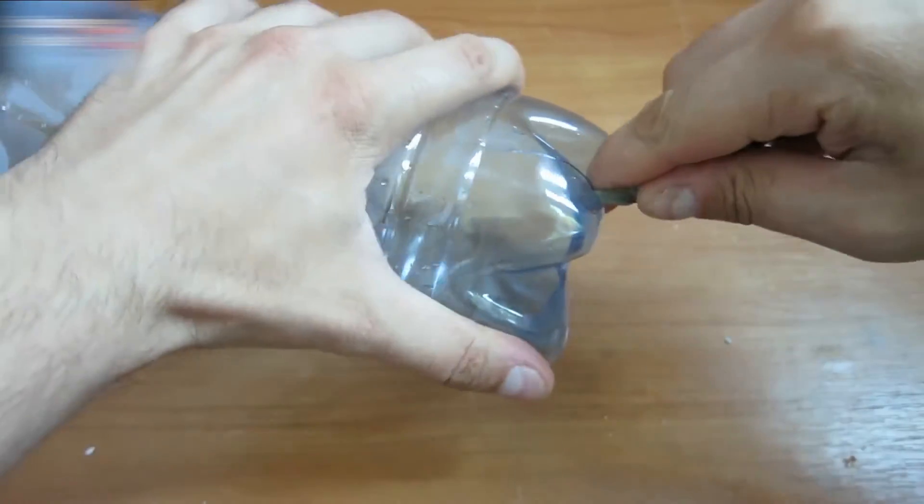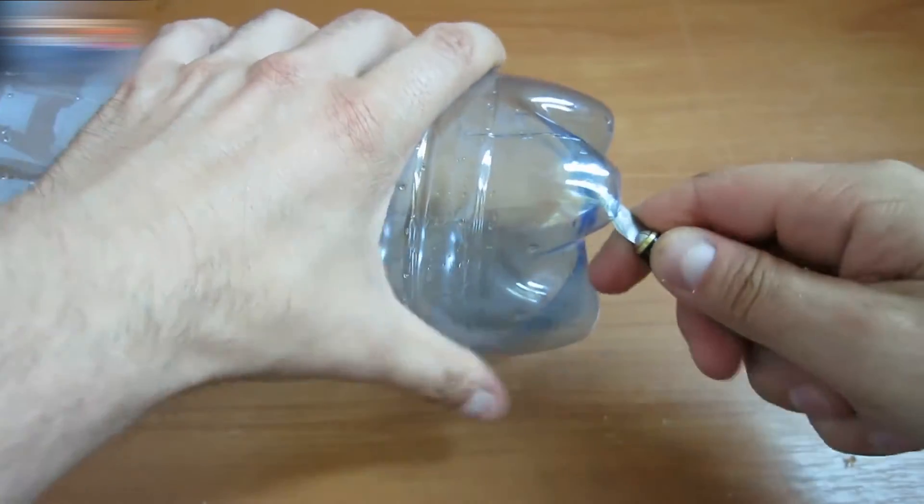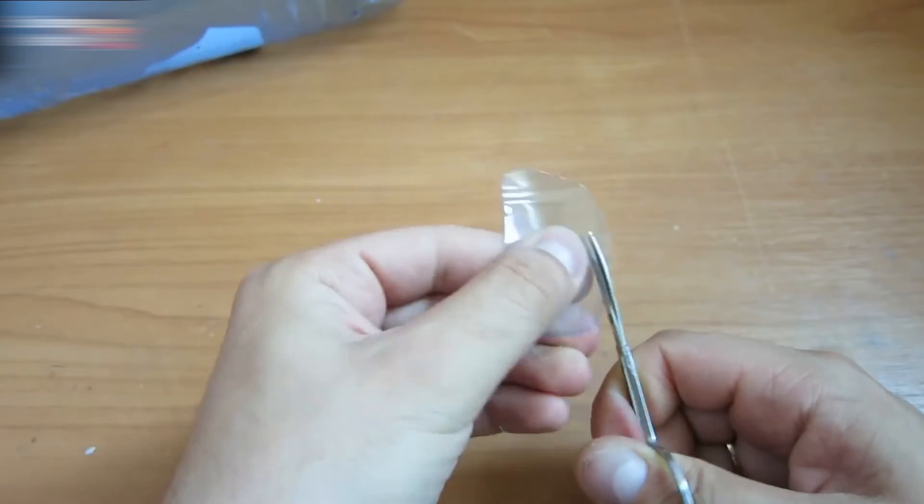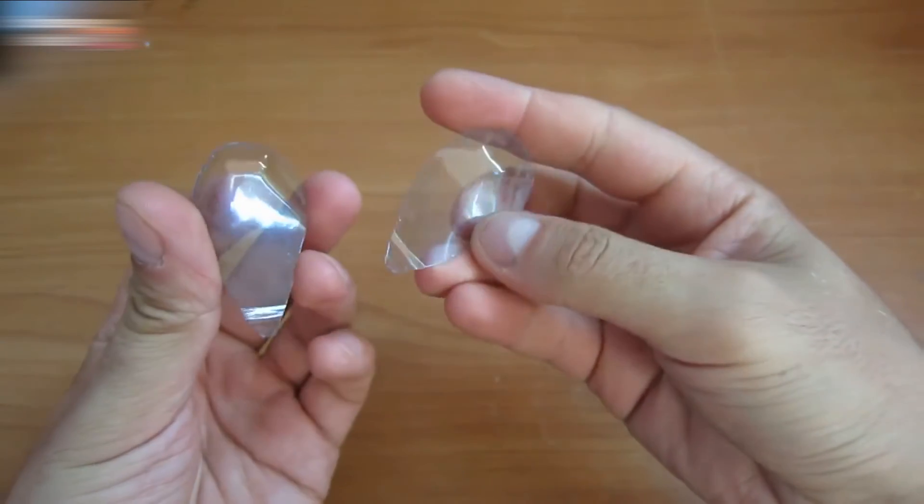Cut two spoon-shaped pieces out of the bottle bottom. Make them even. It should look like this.